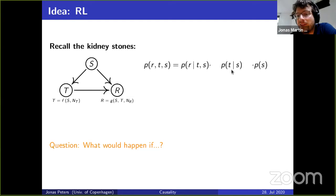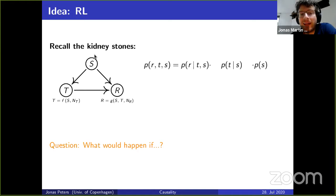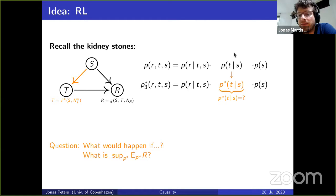The nice thing is that intervening on T just means you're replacing this part of the distribution. This is really like reinforcement learning: T is like your action — a treatment — and you have some covariates S, the state of the world, and R is something like the reward. What you're doing is changing your action, meaning you are intervening on T, the treatment, and replacing the conditional P of T given S.